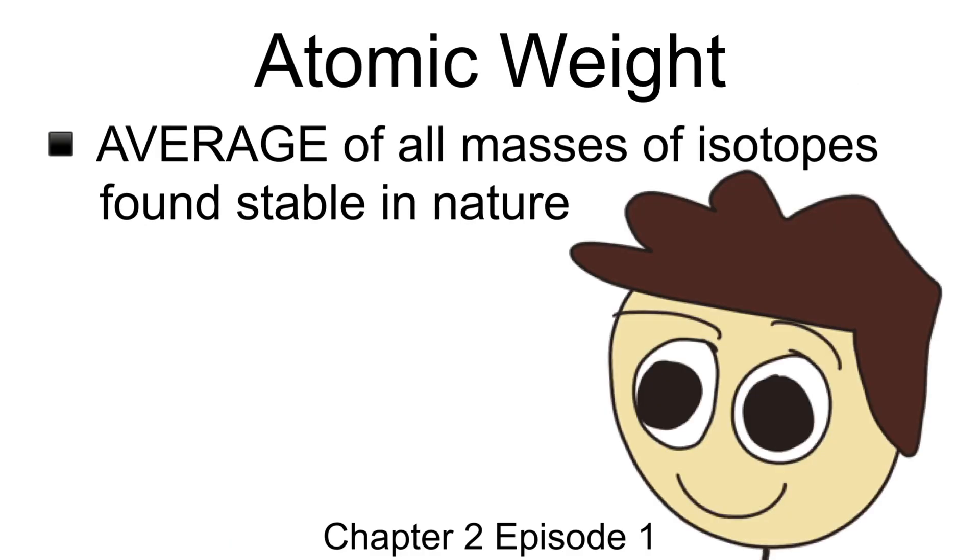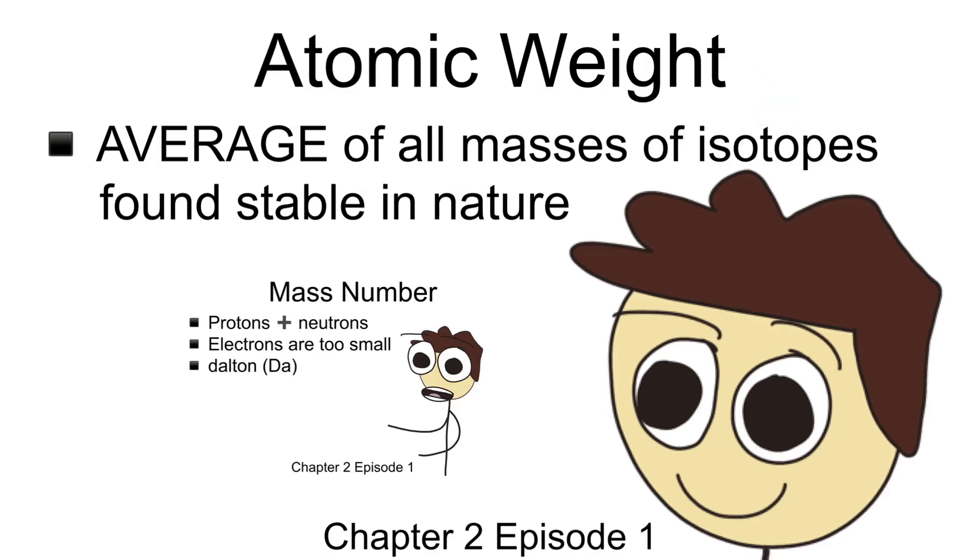Another term you should understand is the atomic weight. The atomic weight is actually the calculated average of all masses of isotopes found to be stable in nature. Don't get atomic weight confused with mass number. They are different. Remember, mass number is the combined weight of both protons and neutrons in the most commonly found version of that particular atom.